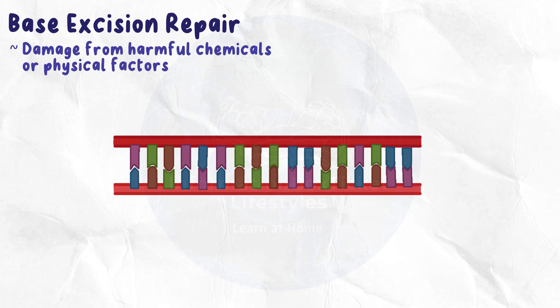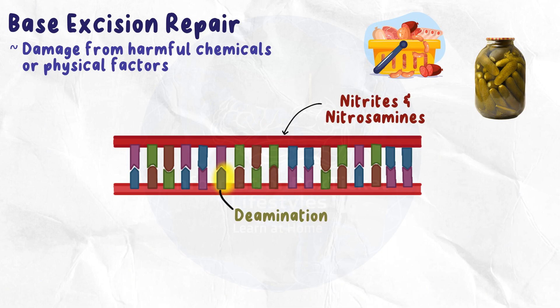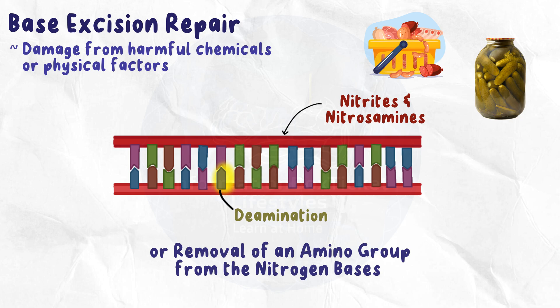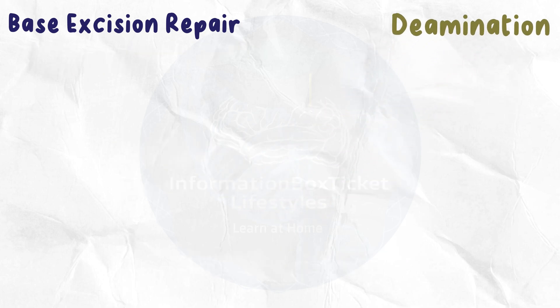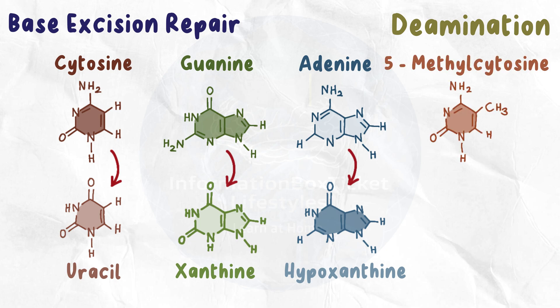Base excision repair is used when the cell's DNA is damaged due to exposure to damaging chemicals or physical conditions. For example, compounds present in cured or pickled foods, such as nitrites and nitrosamines, can trigger deamination — the removal of an amino group from nitrogen bases. Deamination converts cytosine to uracil, guanine to xanthine, adenine to hypoxanthine, and 5-methylcytosine to thymine, altering the molecular structure of the nitrogen base.